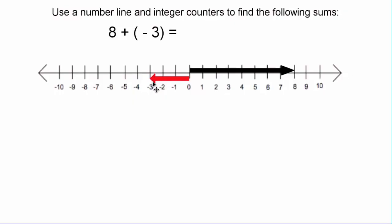Remember, when we add using a number line, where the tip of the first arrowhead is, is where the second arrow begins. So we'll move the negative three arrow into that location. Just like before, we go one, two, three, four, five, six, seven, eight units forward, and then we turn around and go one, two, three units backwards.